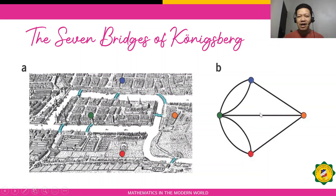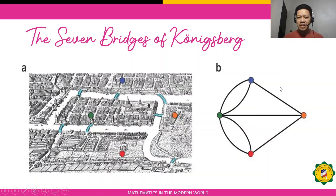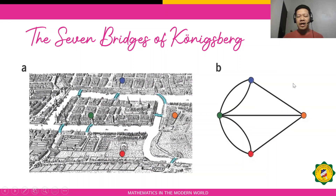The difference between Euler path and Euler circuit is that for an Euler circuit, you go back to the starting point — with the same condition of passing through all edges exactly once. There is a theorem introduced by Leonard Euler on how to determine whether a graph has an Euler path or Euler circuit. We just need to count the number of odd vertices. If there are no odd vertices, all vertices are even, and the graph is an Euler circuit.